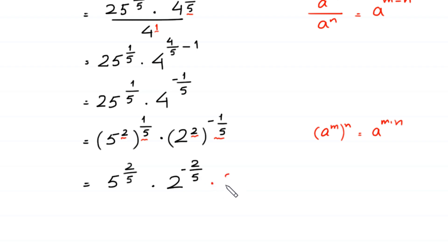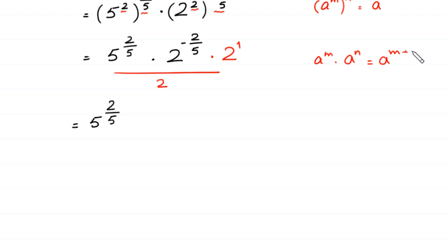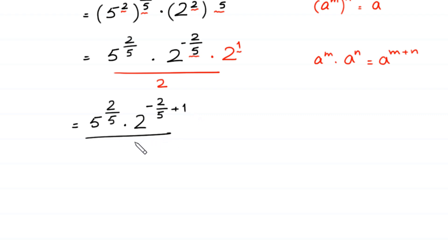From here we multiply and divide this expression by 2. We have 5 to the power 2 over 5. Now this 2 has power 1, and according to the property a to the power m times a to the power n equals a to the power m plus n, we add these powers. So the power negative 2 over 5 is added to power 1, giving us 2 to the power negative 2 over 5 plus 1, divided by 2.